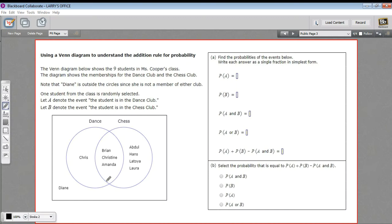In this problem, we have a Venn diagram. These circles, one circle shows the students in the class who are part of the dance club. The other circle shows the students in the class who are part of the chess club. And then here's Diane outside both circles. She doesn't belong to either club.